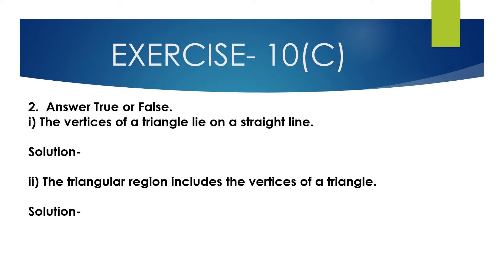Now question number 2, answer true or false. First bit: the vertices of a triangle lie on a straight line. This is false. Second bit: the triangular region includes the vertices of a triangle. This is true.